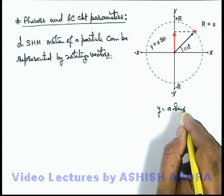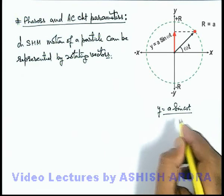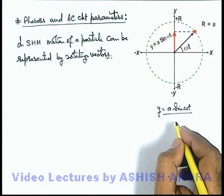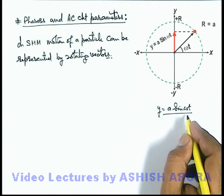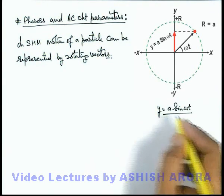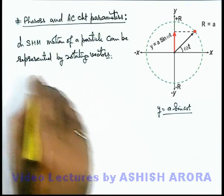And we know well that in case of alternating current circuit parameters, whether we are calculating potential difference or current, it is also in a sinusoidal function. So we can write here, just like SHM.